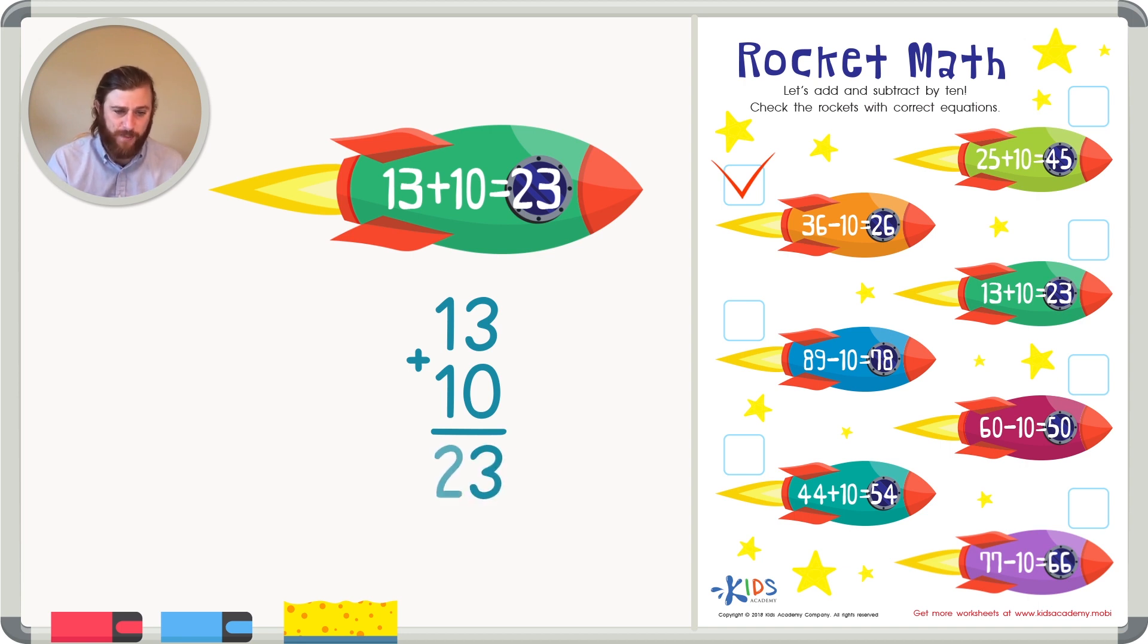And 1 plus 1 just equals 2. This rocket is correct again. It shows a sum of 23. So let's go ahead and check that rocket.